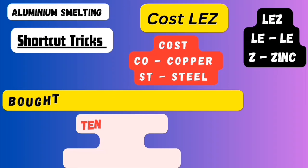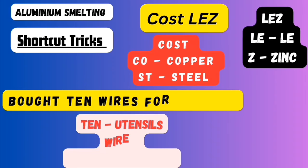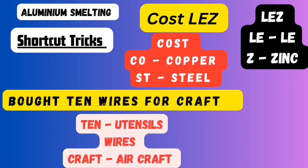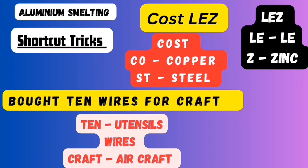In the LSM mall the cost is very less. COST stands for: CO — copper, ST — steel, LE — lead, Z — zinc. Aluminium acts as a substitute for copper, steel, lead, and zinc. This is the third point.